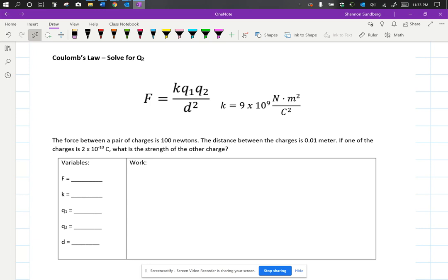Let's take a look at our question here. It says the force between a pair of charges is 100 newtons. The distance between the charges is 0.01 meter. If one of the charges is 2 times 10 to the negative 10th Coulombs, what is the strength of the other charge?